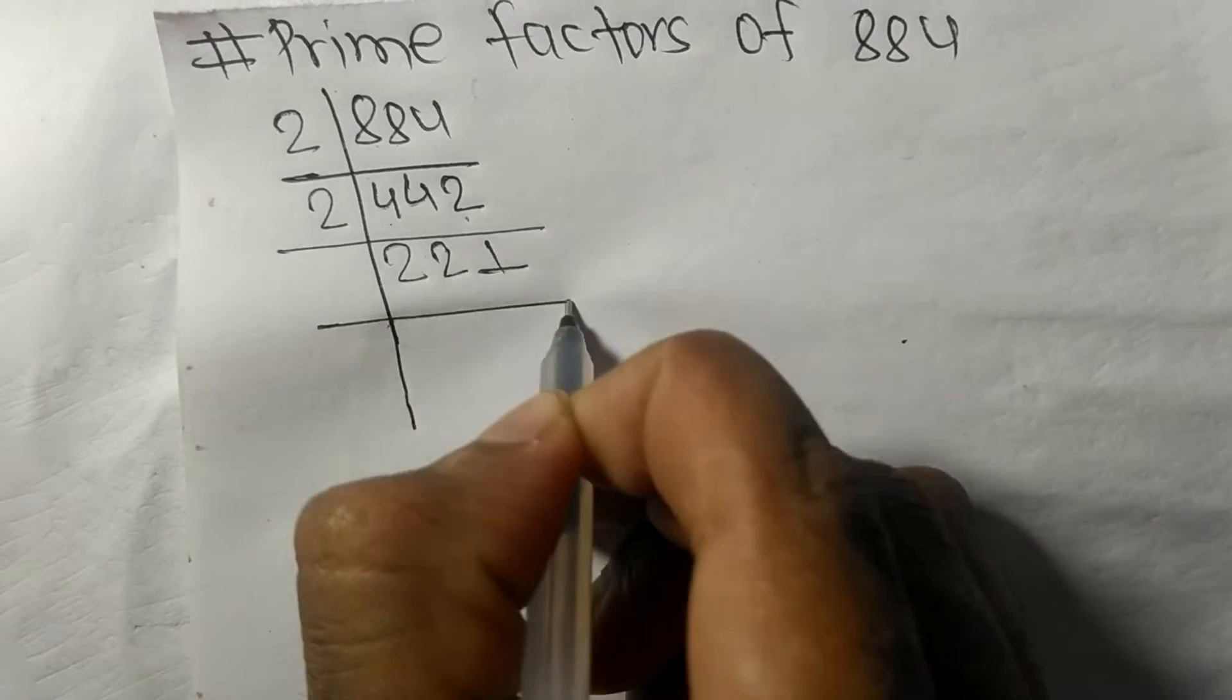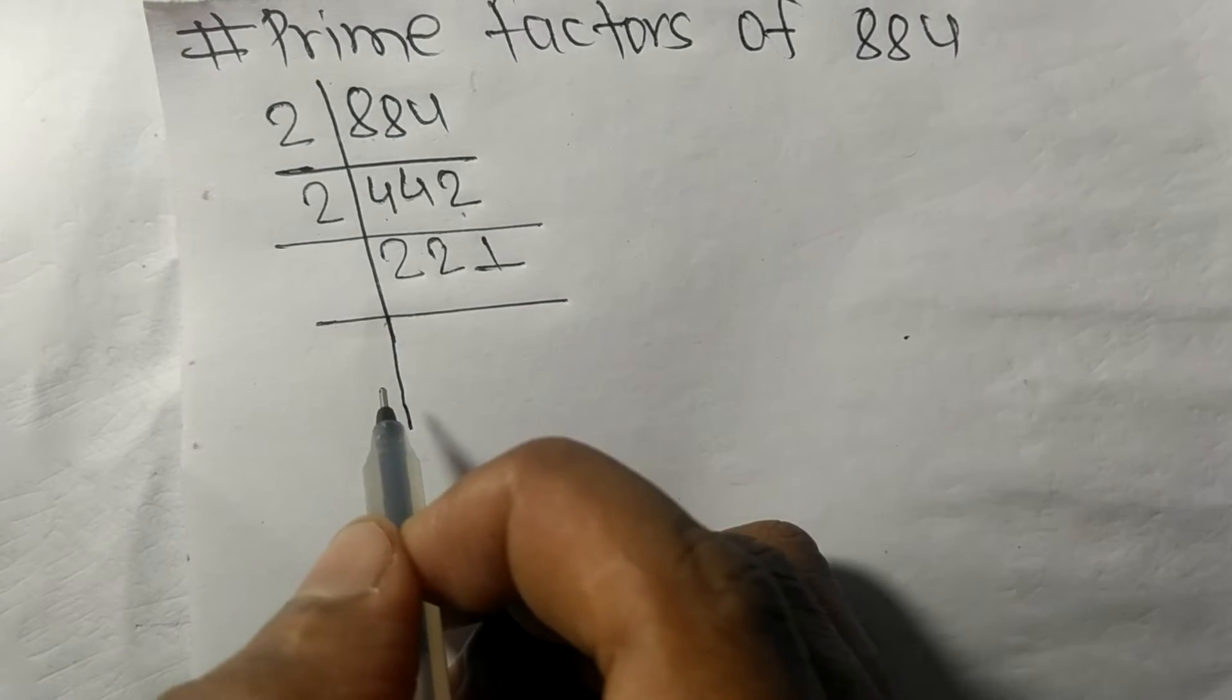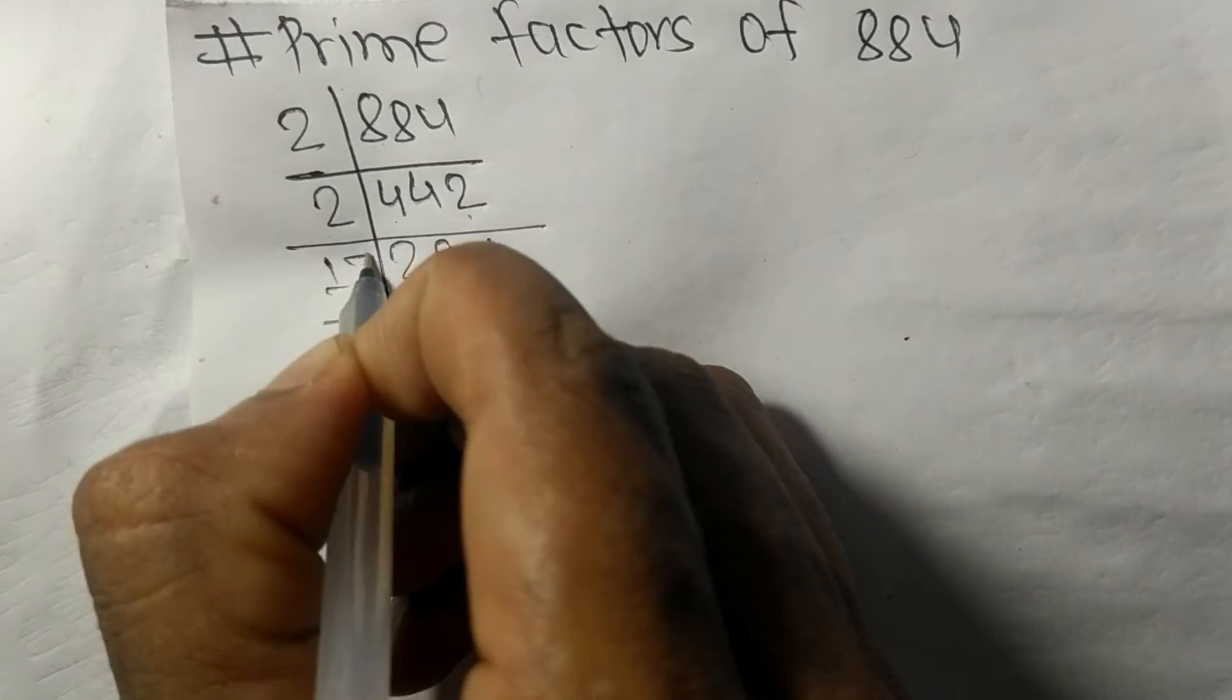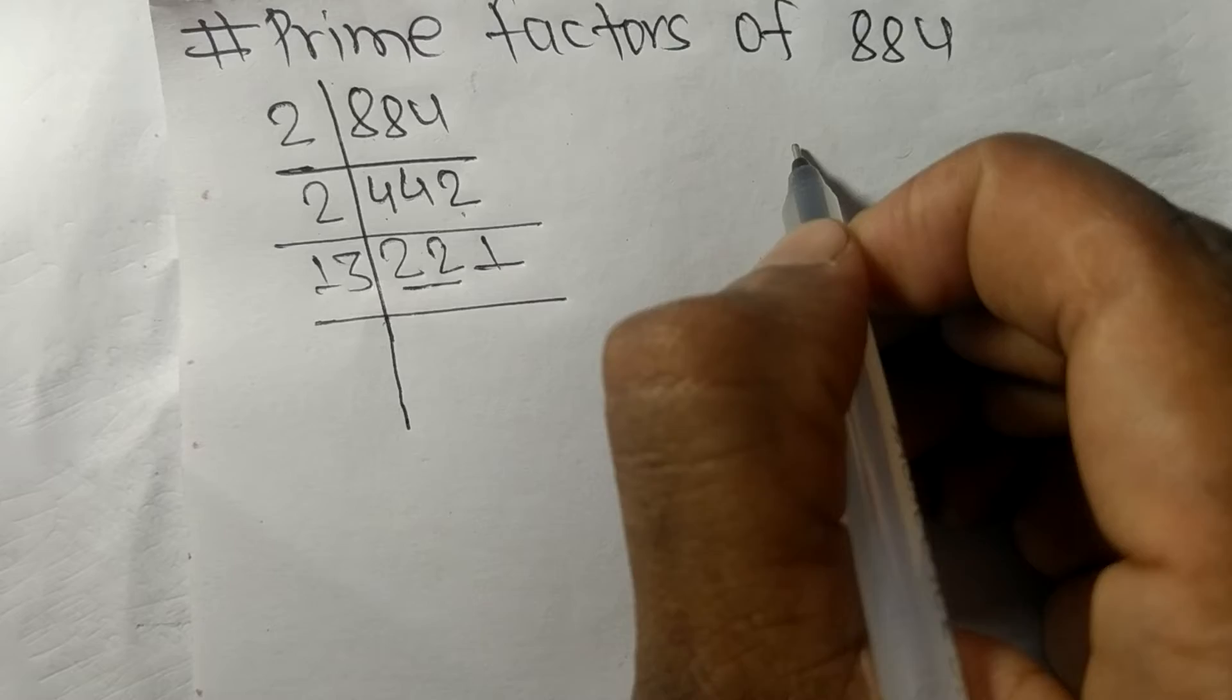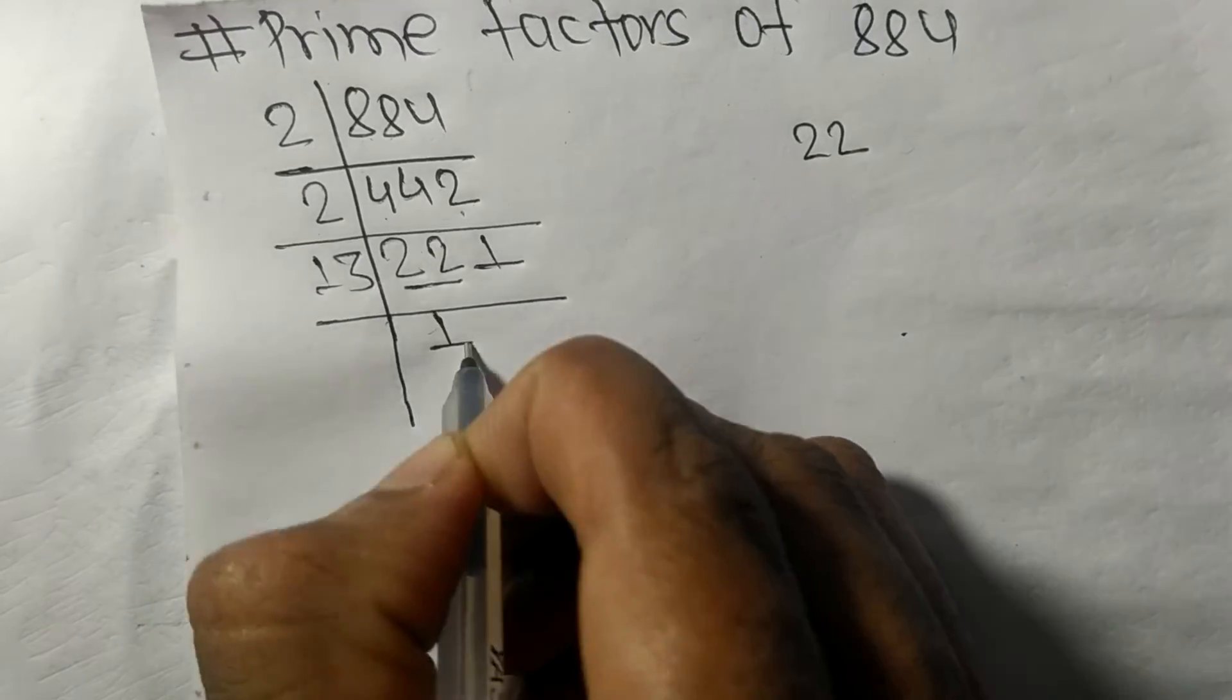Now we got 221, which is exactly divisible by 13. First we have 22, so 13 times 1 means 13. On subtracting we get 9.